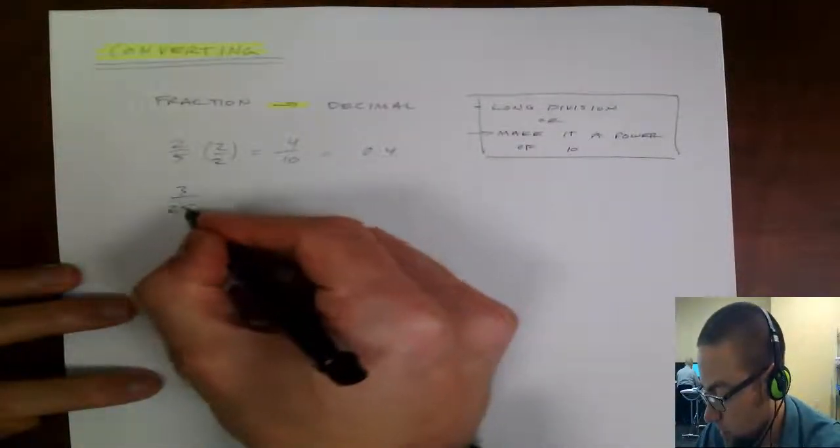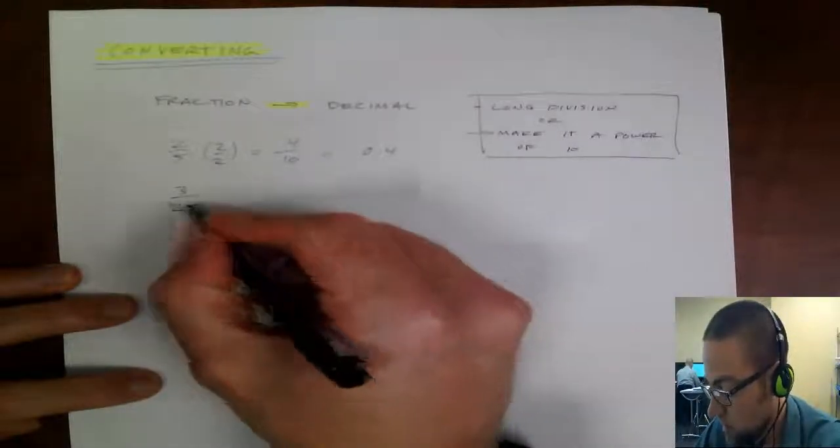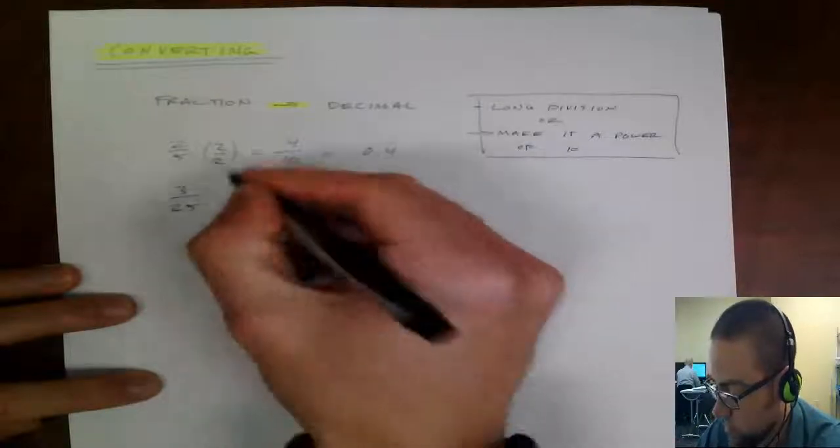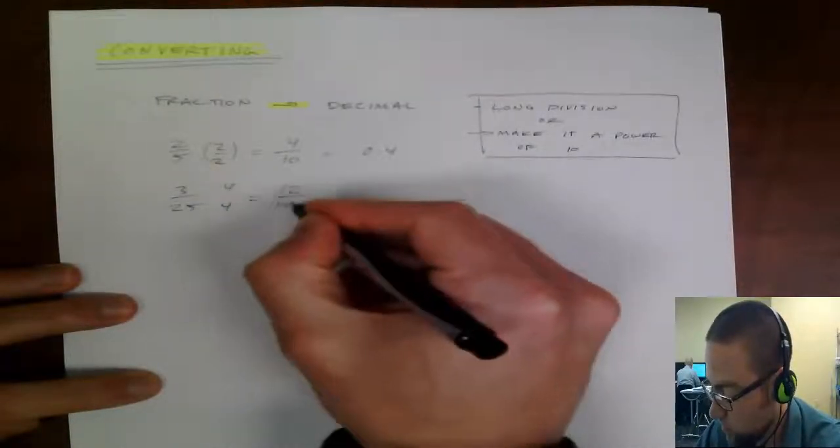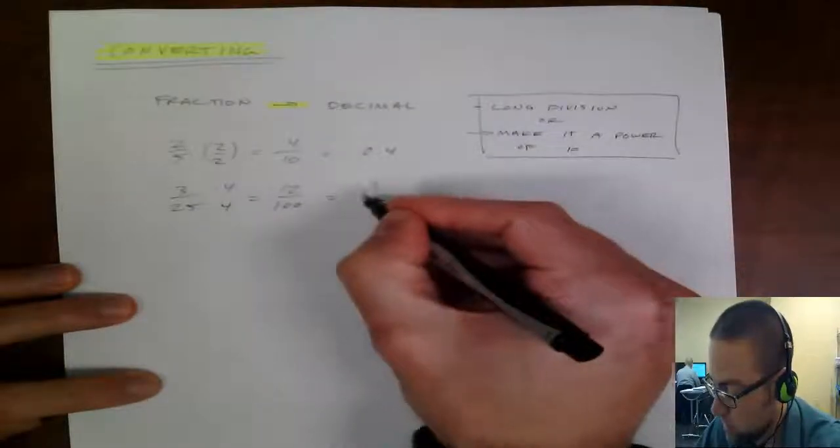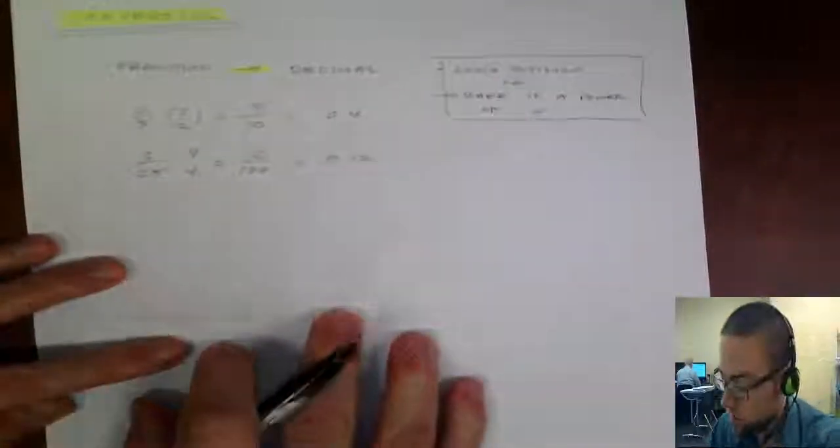You could also do it with higher powers of 10, like if I had 3 25ths. If I can see that, oh, if I multiply that by 4, I can make it into 100. So multiply by 4 over 4, I will get 12 hundredths, which would be 0.12.